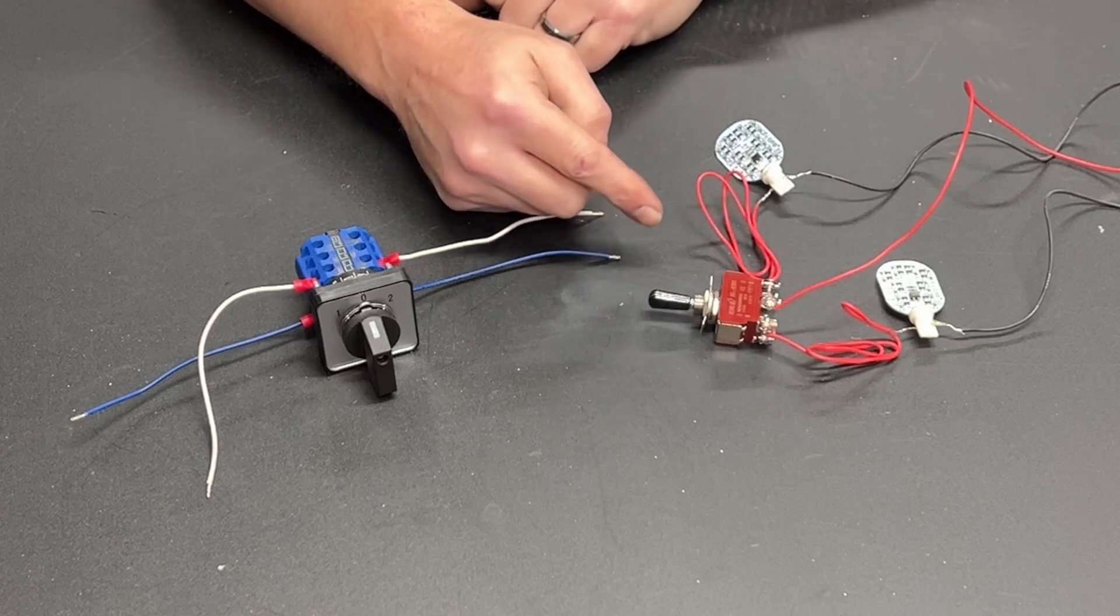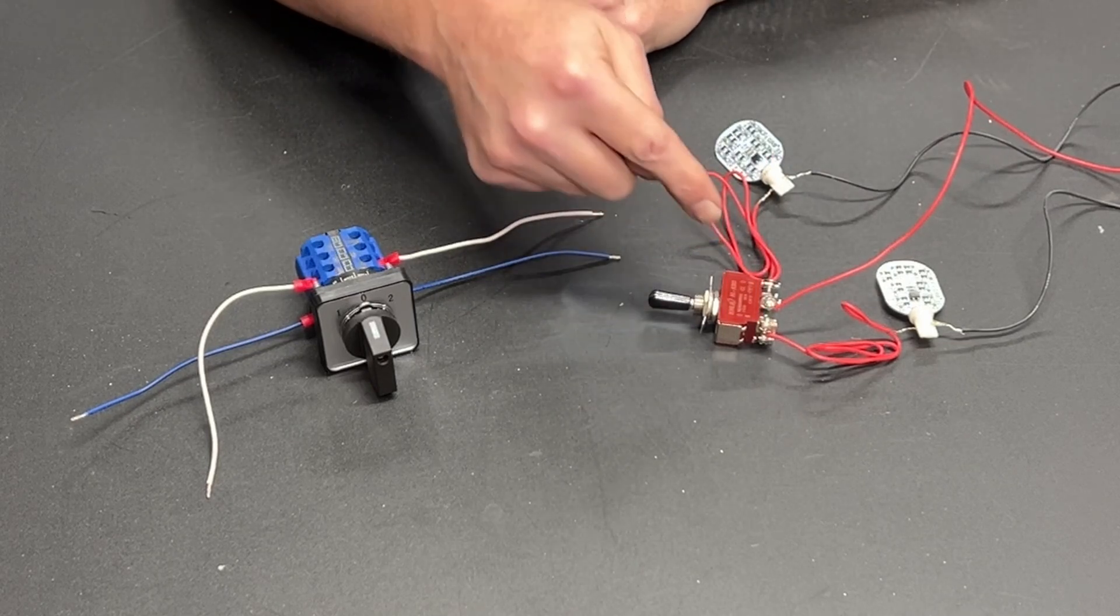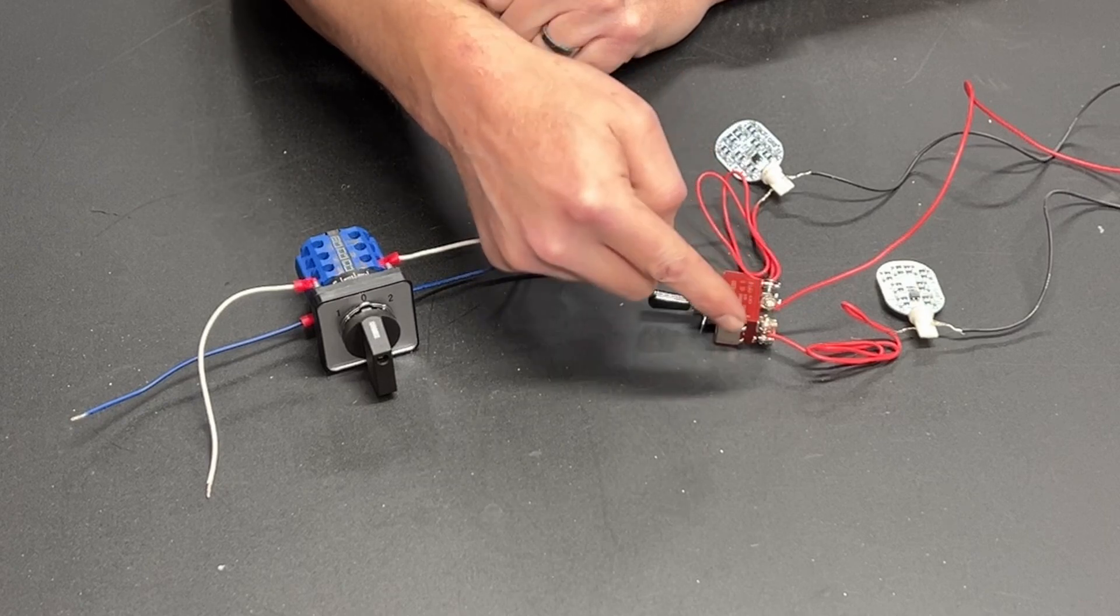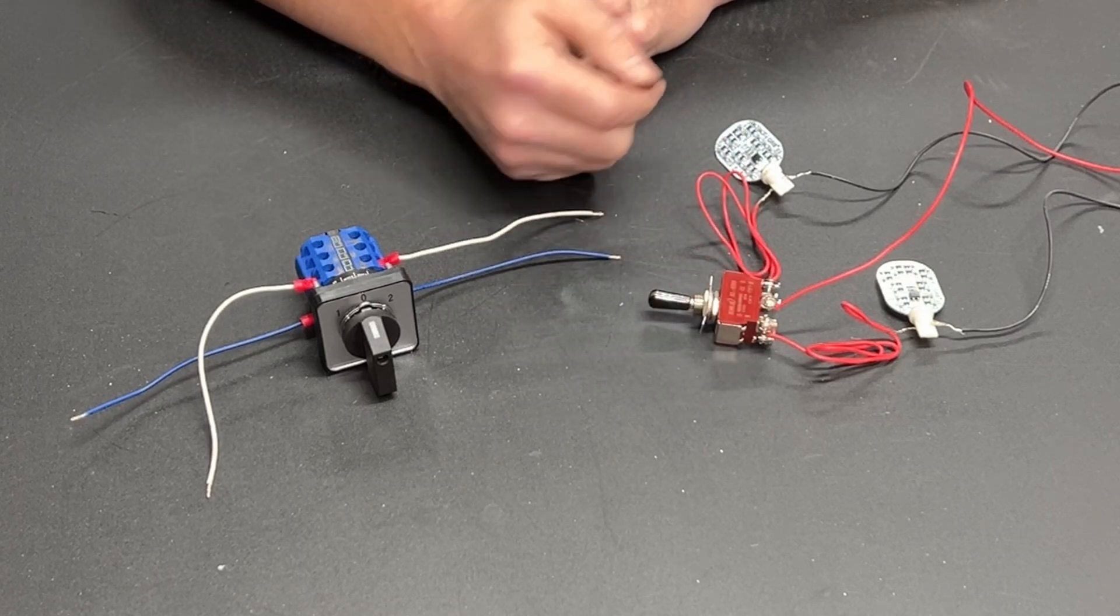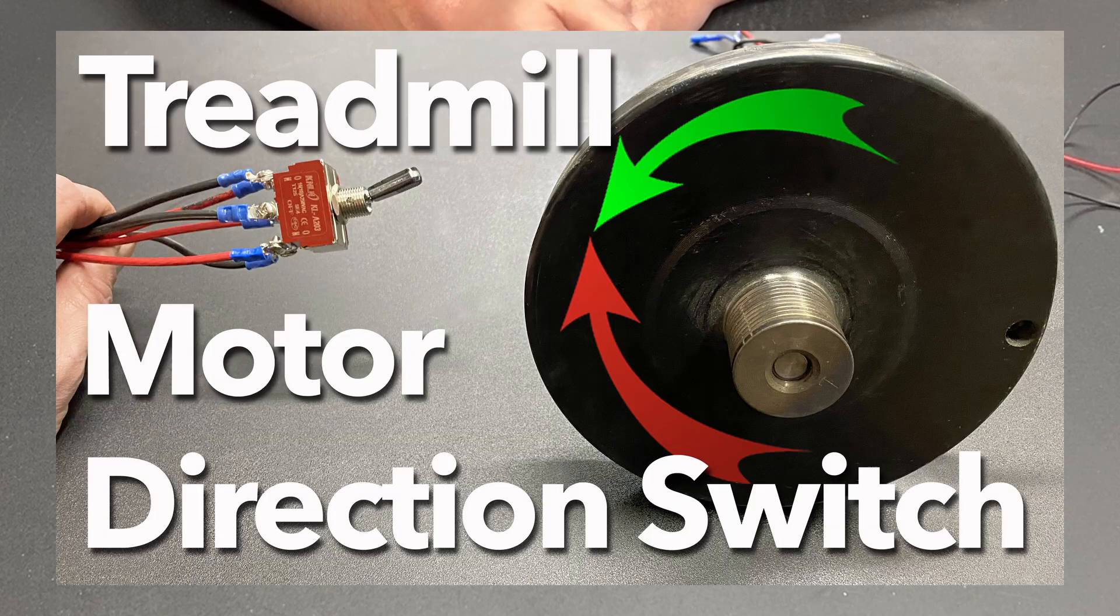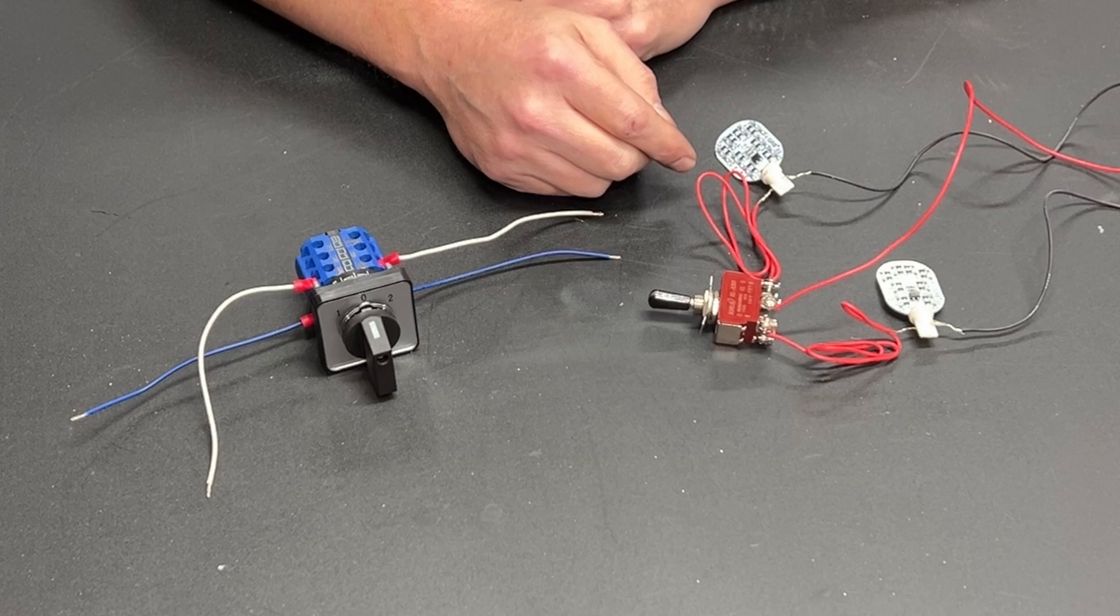There are all kinds of uses for switches like this. A double pole double throw switch like this one where you have basically two sets of switches is oftentimes used to reverse direction on a DC motor. I have other videos on that. It can be used for all kinds of things.